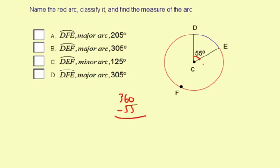And the reason why is the total degrees in a circle is 360 degrees. So 360 minus 55 is 305, so it should be 305 degrees.